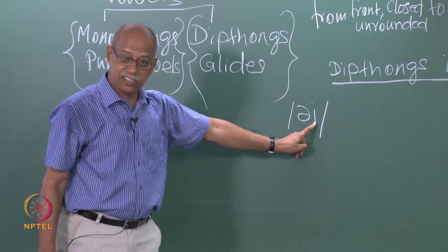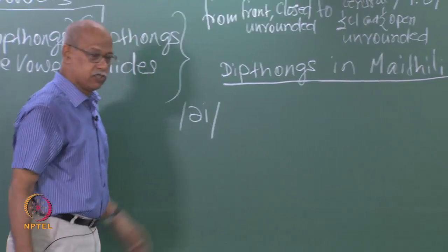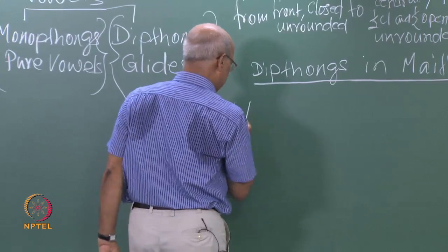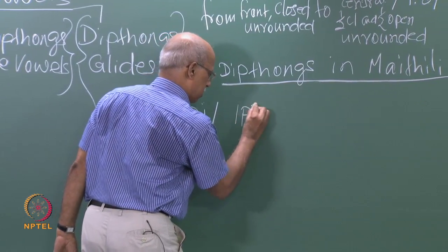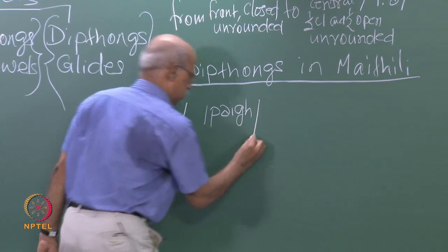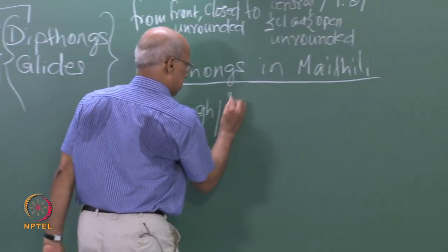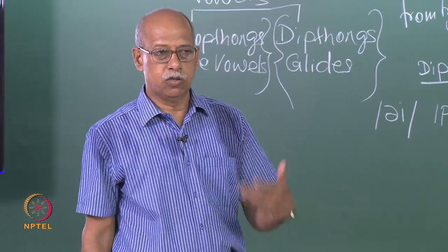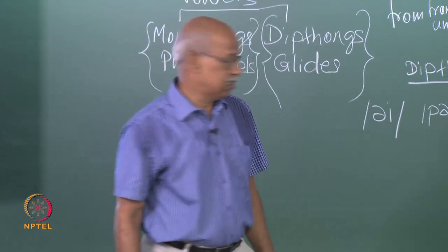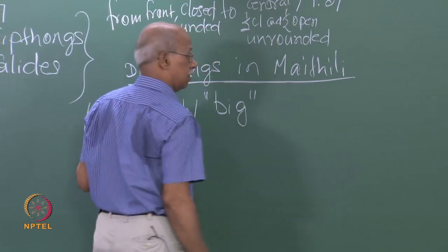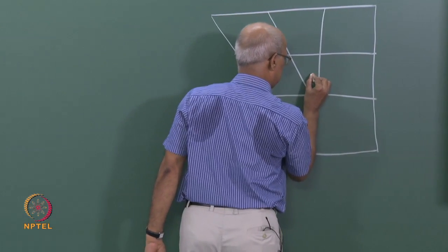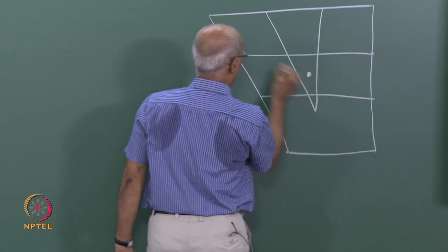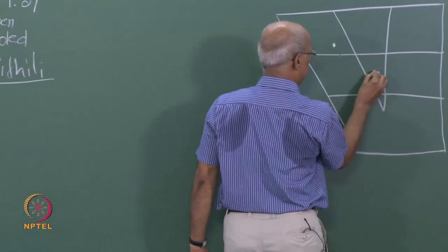Can you pronounce it? It is not 'I' — what is it? It should be long by definition. So in Maithili, we have a word with this sound. What is it? Can you read it aloud? 'Paig.' It means big. You can follow the same method in describing the diphthongs in Telugu, Tamil, in any language of the world. How do we describe it? It starts somewhere here and comes up to here. This is the movement.